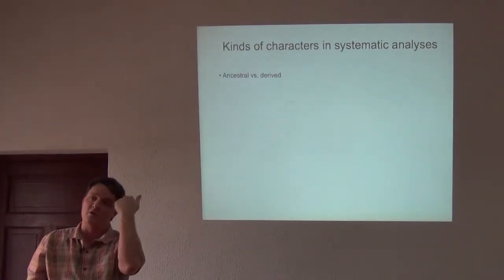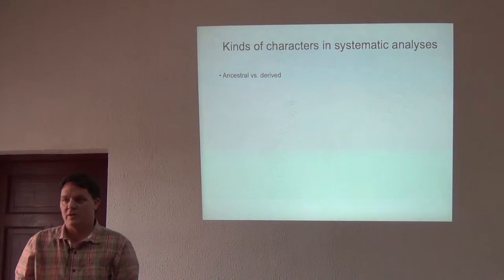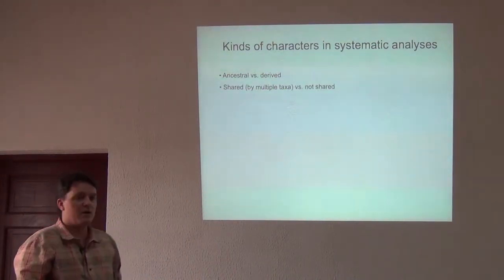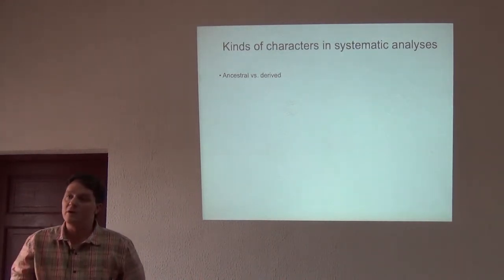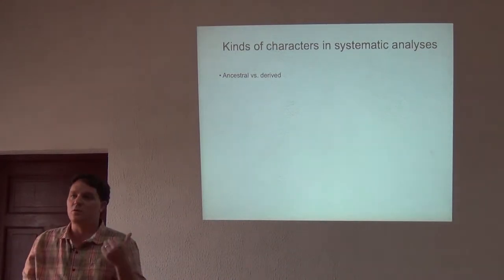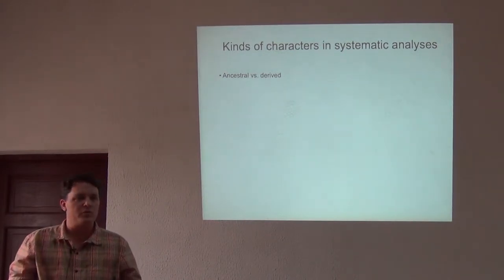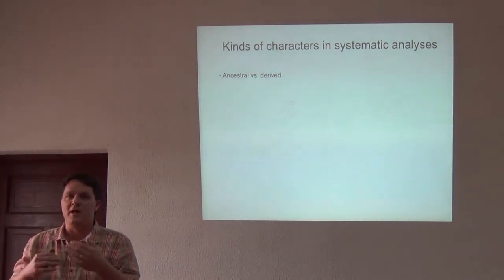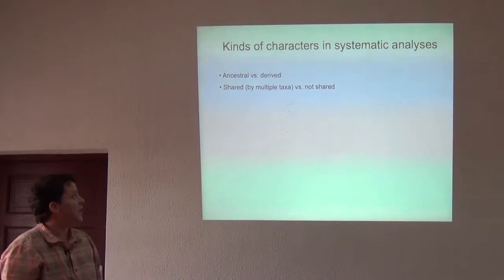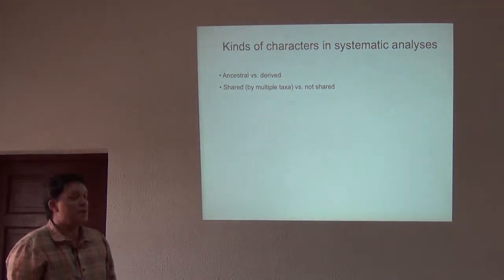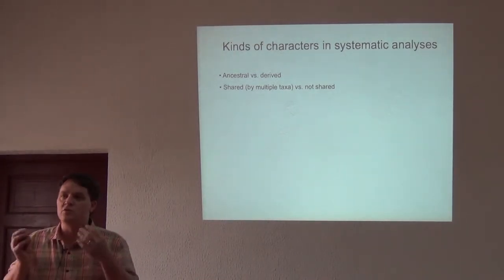Now I want to talk a little bit about characters on trees. This is going to become important when we talk about how phylogenies might be used to represent classification schemes. The kind of characters we want to distinguish between are ancestral characters versus derived characters. An ancestral character is one that comes from deep in the evolutionary history of a group, and a derived character is one that's advanced with respect to its evolutionary origins or has changed. Birds all have wings and feathers — those are shared characters of birds.